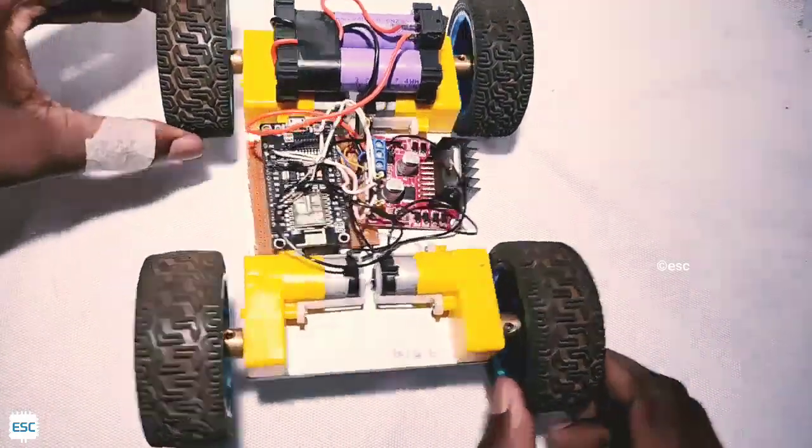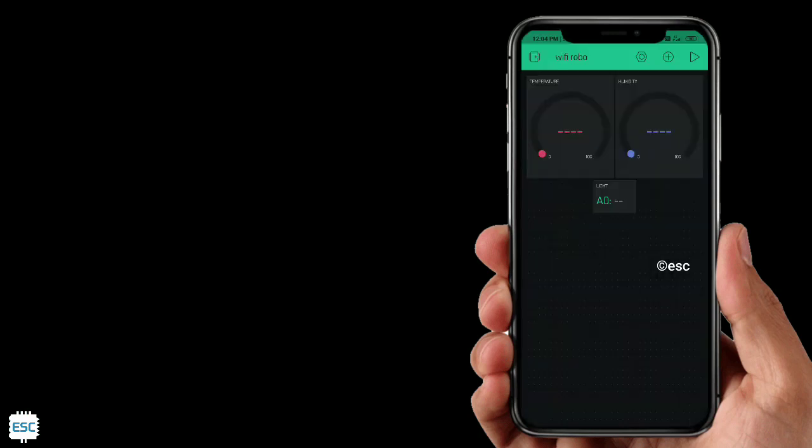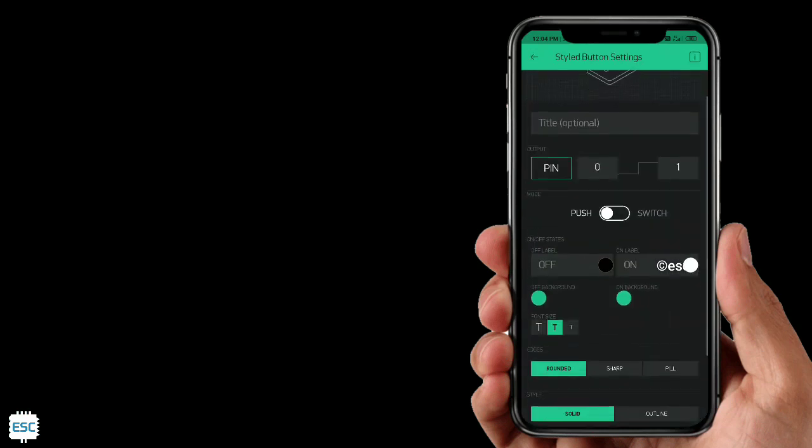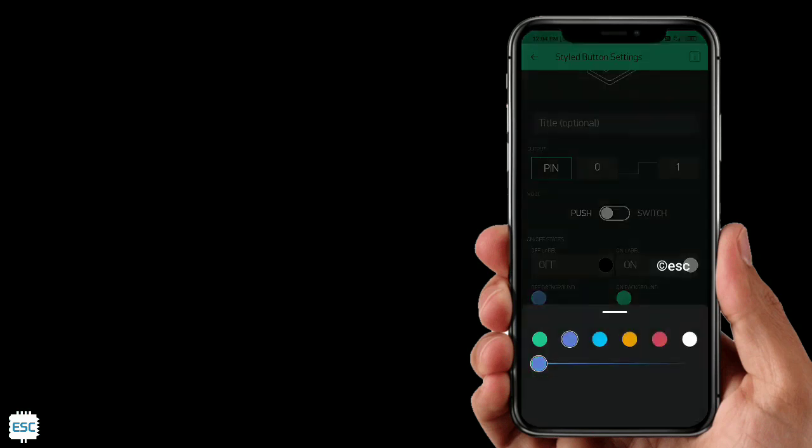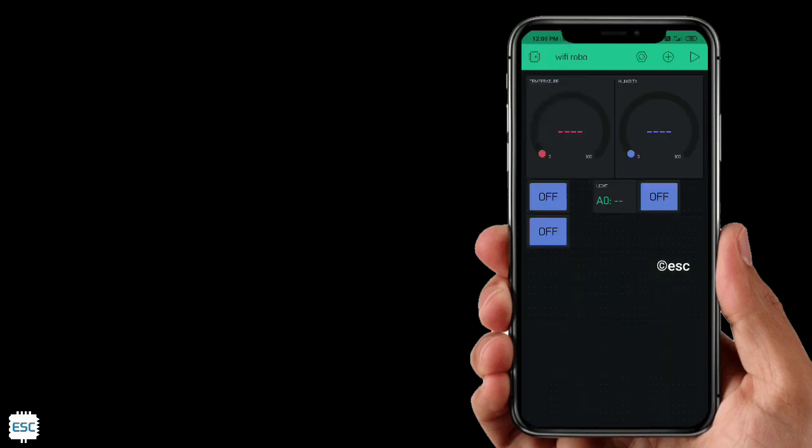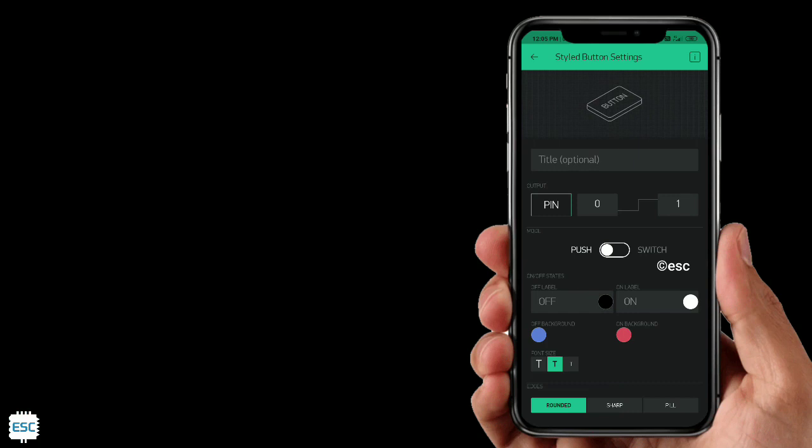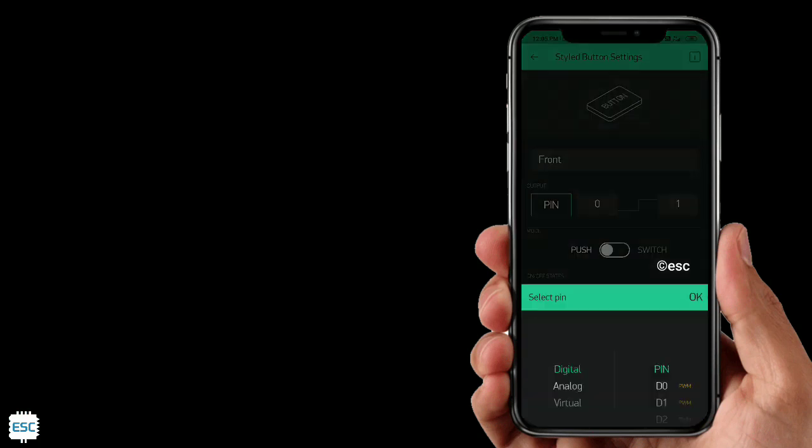After attaching the wheels, let's set up the Blink app. In Blink app, I am just adding some more buttons to my previous project, so please watch my previous video to know more about that. Add 4 styled buttons and place them according to your ideas. These buttons are for controlling the rover. First, select one button and give the name as forward, then select pin D8.